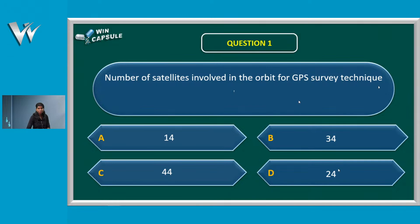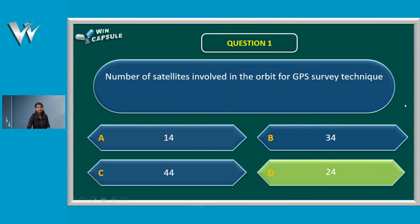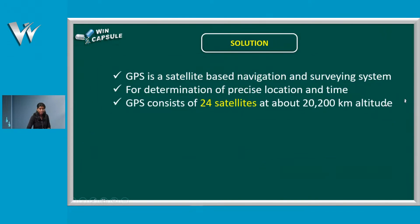In GPS techniques, we use satellites and ground stations. There are three components. What do you think? The answer is 24.